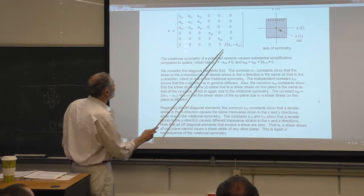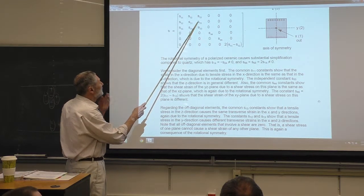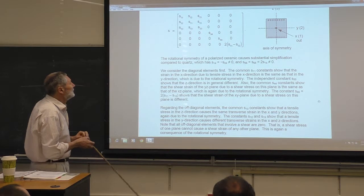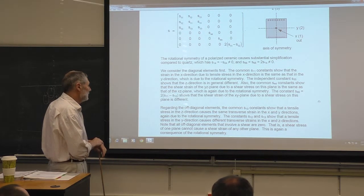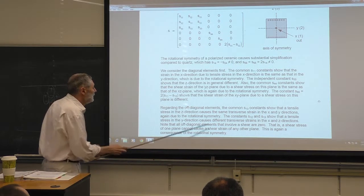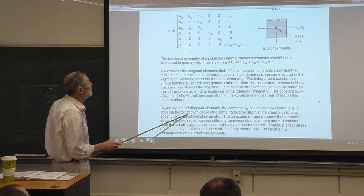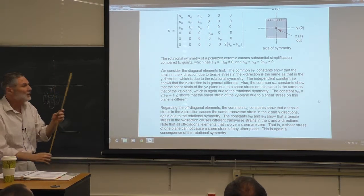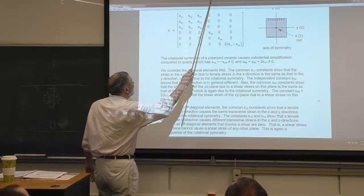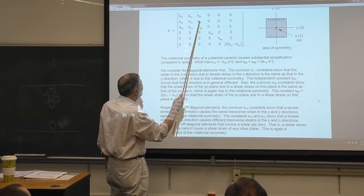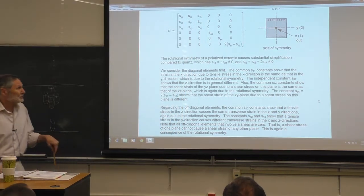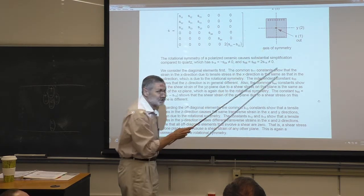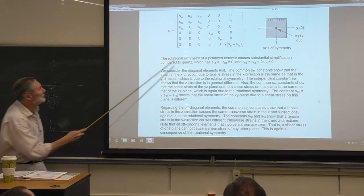Now let's look at the off-diagonal elements. Notice these two are the same. If I exert a tensile stress in the z direction, when I do that matrix multiplication, this element gets multiplied by the stress. This tells us that when we stress it in the polarized direction, it strains the same amount in the x and y directions — it has to be by rotational symmetry. That's why those two off-diagonal elements must be equal.